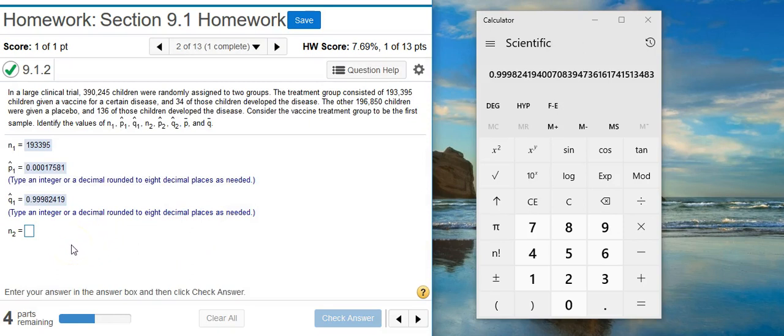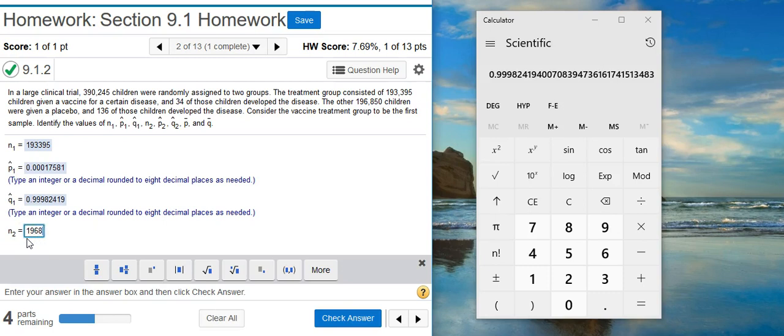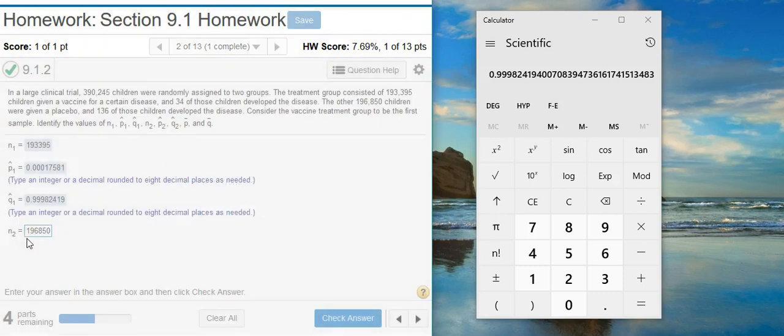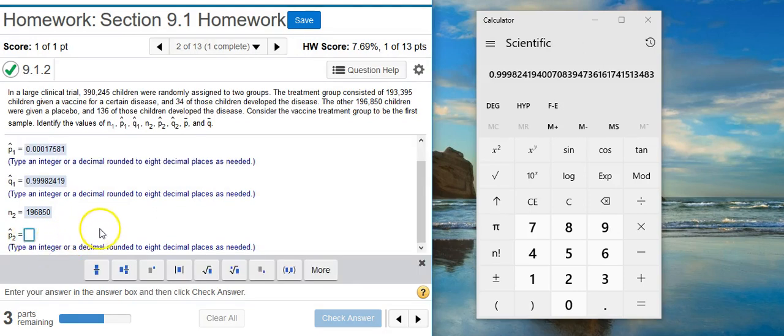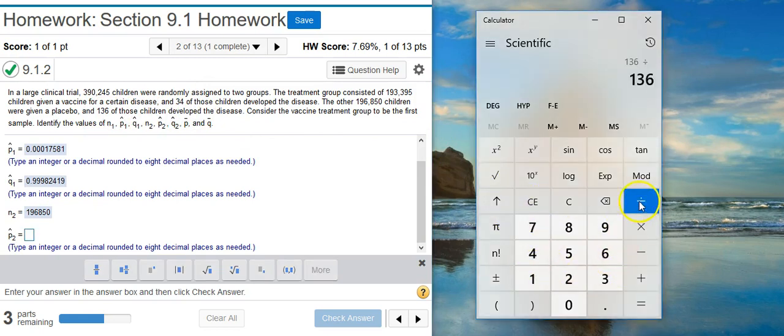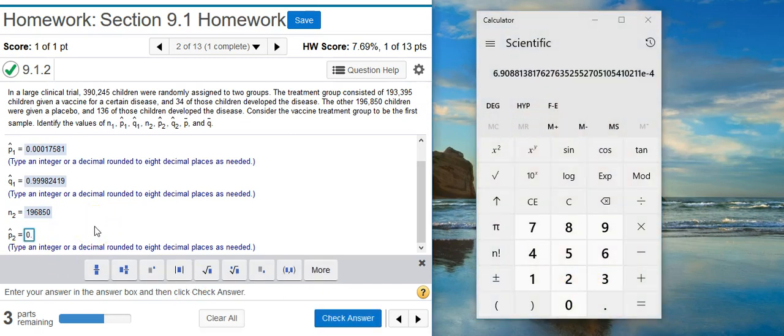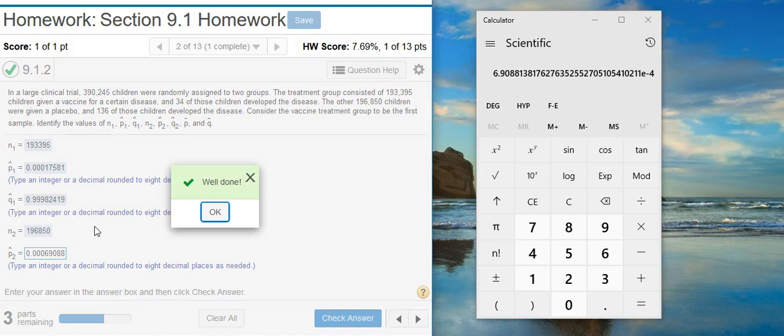Now, I need to do the same thing with the second sample. So, the size of the second sample, those that were given the placebo, is listed here in the problem statement. That's the 196,850. And then, the proportion of success, which again, is going to be developing the disease. So, I've got to take the 136, to actually develop the disease there in the second sample, and divide by that sample size. So, again, I get a really small number. Well done!